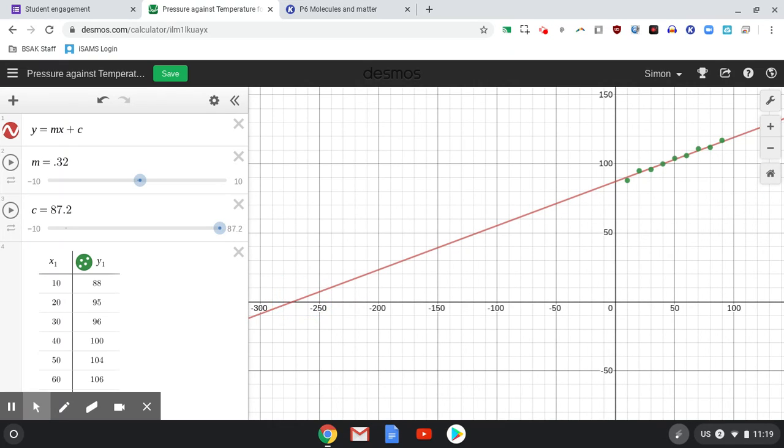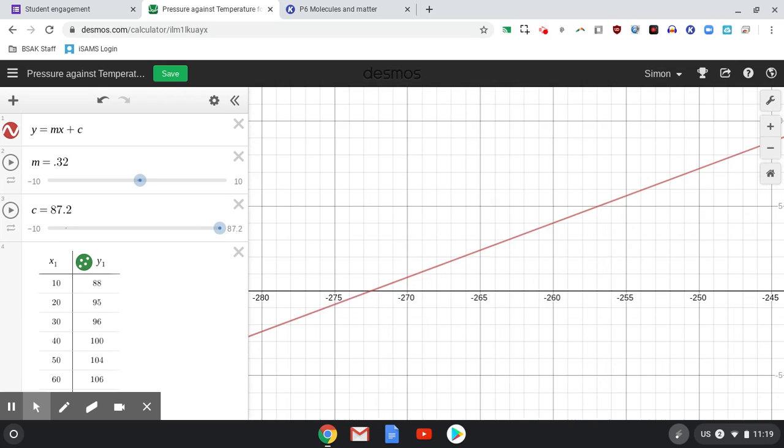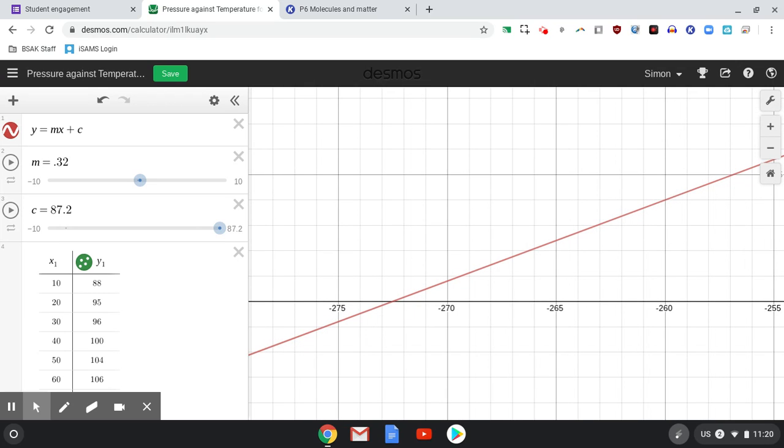So this is the important temperature. A few of you said that's the temperature at which pressure is zero, that's correct. But I wanted you to do a bit of research. I wanted you to look into this and it is significant. It's actually called absolute zero.